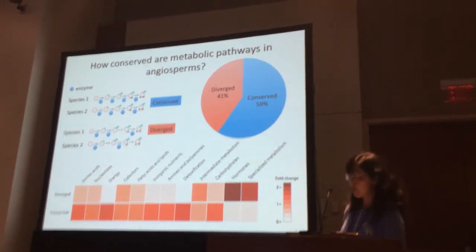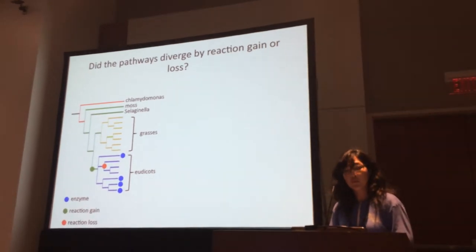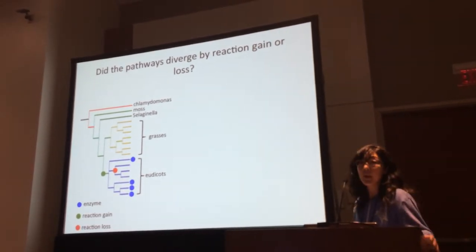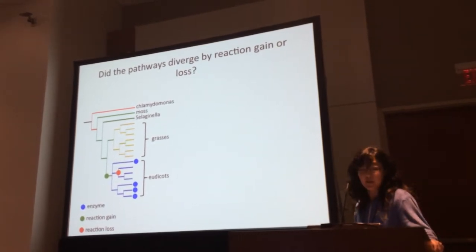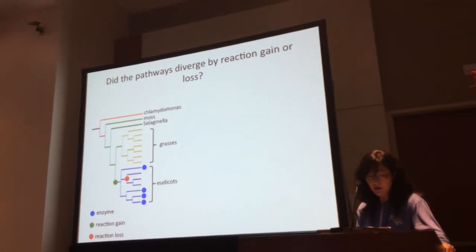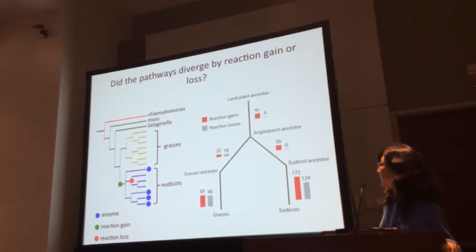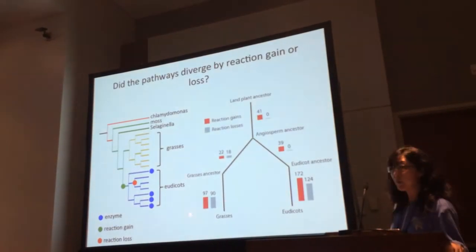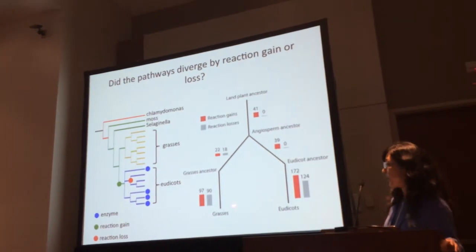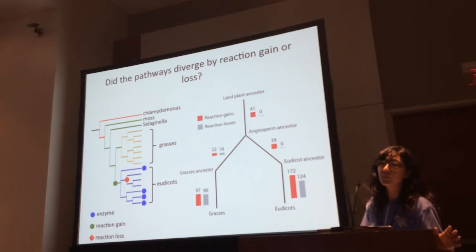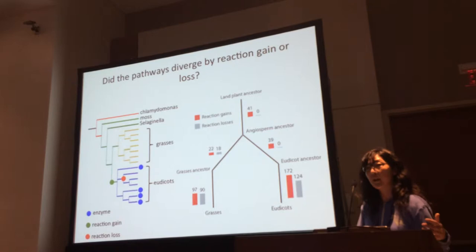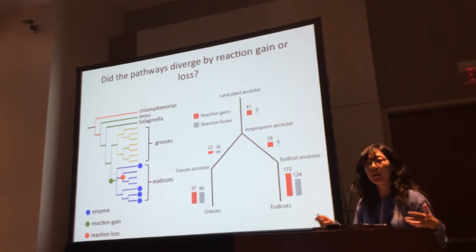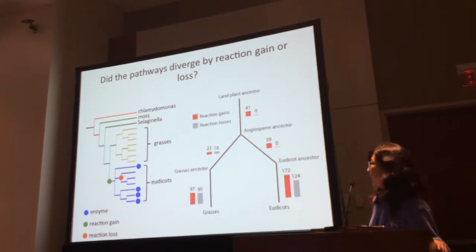We looked deeper into the diverged pathways and asked whether they diverged through reaction gains and losses. To answer this, we took the presence and absence of enzymes catalyzing reactions and used maximum likelihood methods to infer reaction gain and loss events along the lineage, then summed up all those events. We found that most reaction gains and losses occurred fairly recently in the lineage, and to my surprise there were as many reaction loss events as gain events — I had considered metabolic innovation to be mostly due to gains, but there's actually a lot of dynamic loss of pathways too.